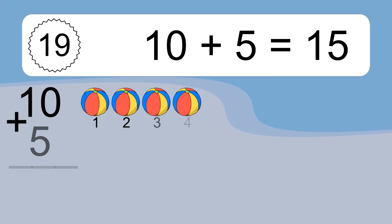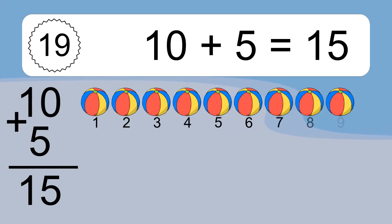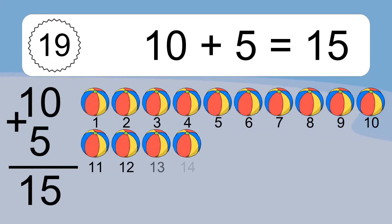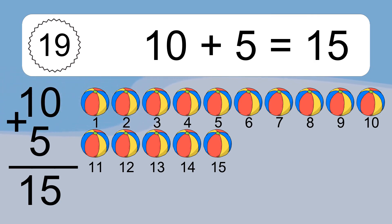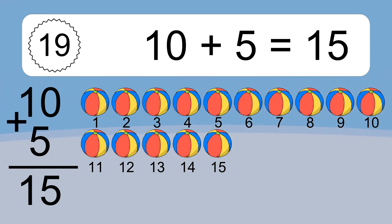10 plus 5 equals what? 10 plus 5 equals 15. Let's count it. 1, 2, 3, 4, 5, 6, 7, 8, 9, 10, 11, 12, 13, 14.